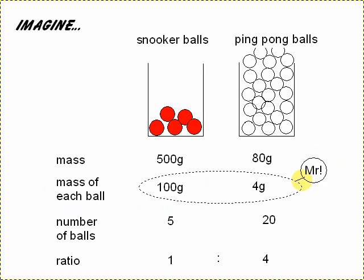This is equivalent to the Mr, the relative atomic mass of atoms, the mass of each atom. In this case, we're talking about mass of each ball. So we would say in this case, you would have 5 snooker balls. Here, because you've got 80 grams of ping pong balls with 4 grams each, that will be 20 balls, which gives a ratio of 1 to 4, which is obviously a different way around in terms of the mass.